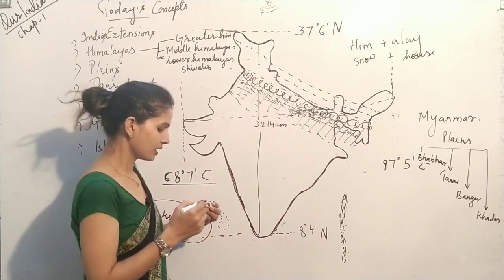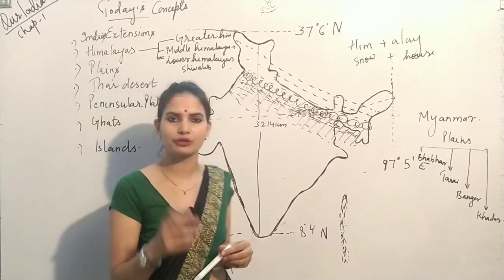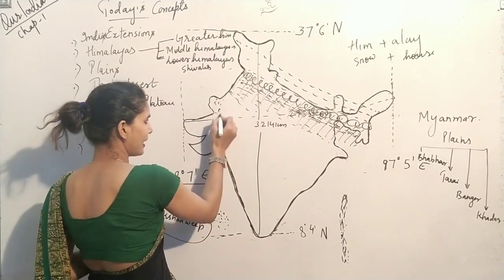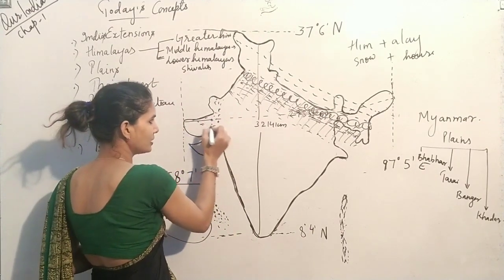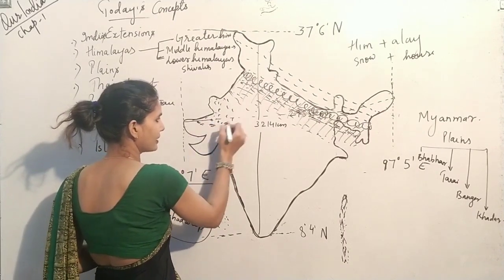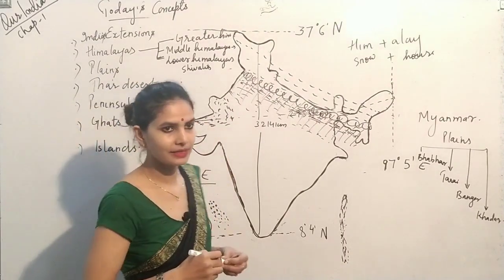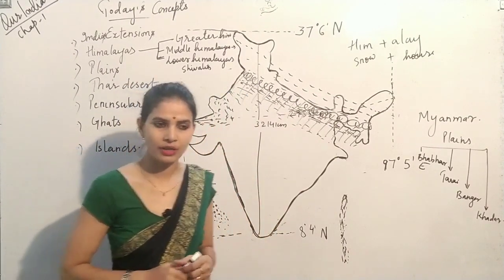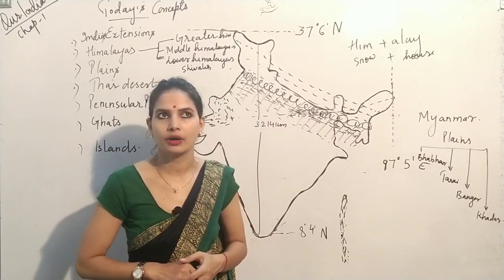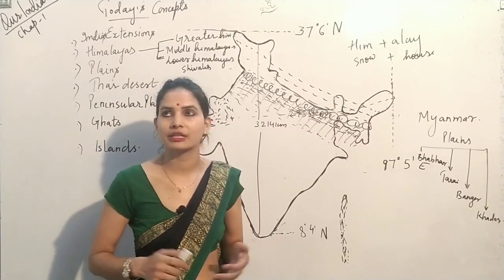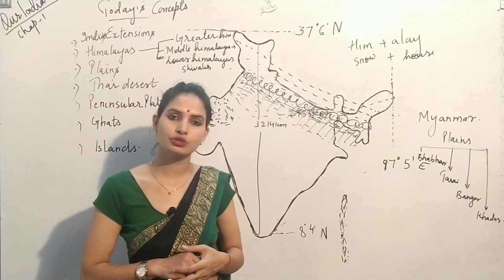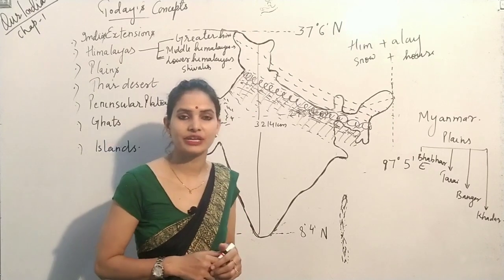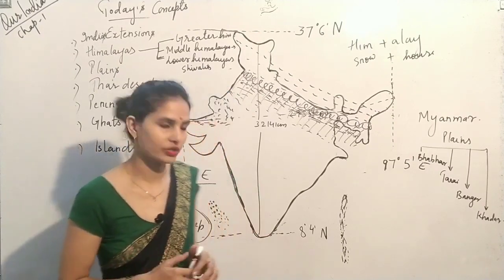Next is the Thar Desert. The Thar Desert is a sub-part of the plain, formed at the western part of Rajasthan, and it also touches some part of Gujarat. The Thar Desert contains many sand dunes, receives very less rainfall, and has xerophytic plants. Xerophytic plants are those which have thorns over their body and have deep, long roots that penetrate deeply into the soil to get water.